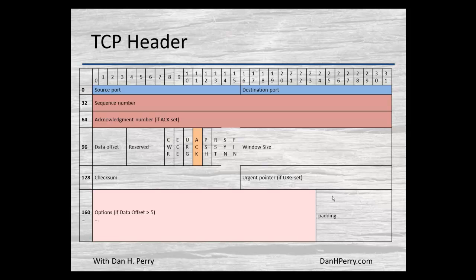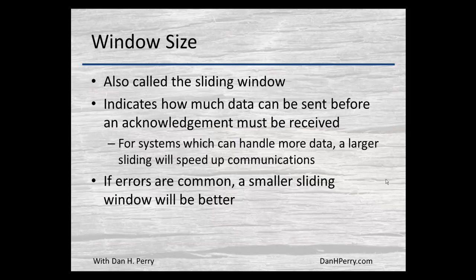Now we're going to start looking at the window size. The window size is also called the sliding window. The sliding window is basically a way of controlling the amount of data that's sent before an acknowledgement has to be received. If we had to do an acknowledgement for every packet that we sent, transmission would be very slow.